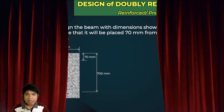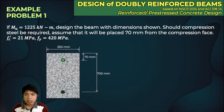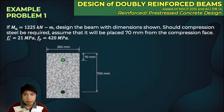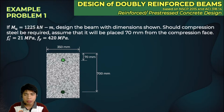Hello guys! Welcome to the second part of our video about the design of doubly reinforced beams. In this video, we are going to solve an example problem for the design of doubly reinforced beams. Take note that this is an SI problem, so we will be using the NSCP 2015. If M_U equals 1,225 kN·m, design the beam with the dimensions shown. Should compression steel be required, assume it will be placed 70 mm from the compression face. f'_c is 21 MPa and f_y is 420 MPa.